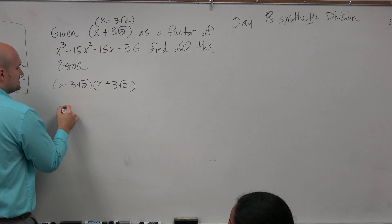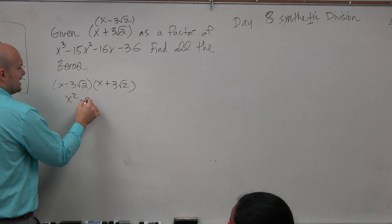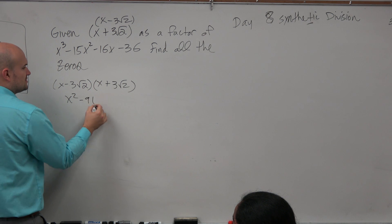So what we'll do is we'll multiply using difference of two squares. And when we do that, we get x squared. Negative 3 times negative 3 is a negative 9. Square root of 2 times square root of 2 is going to be 2. So we get x squared minus 18.